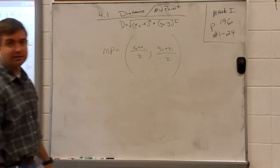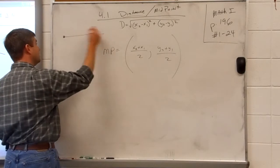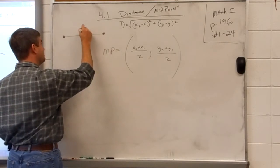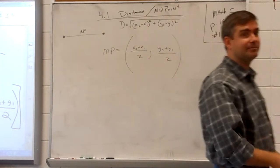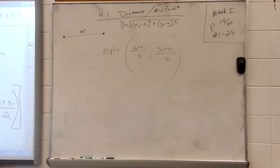To find the midpoint, remember what we're doing, right? You have an end point and an end point, and we're trying to find the midpoint. In order to find the midpoint, you simply add up your x's, divide by 2. Add up your y's, divide by 2. It's that easy. It really is.